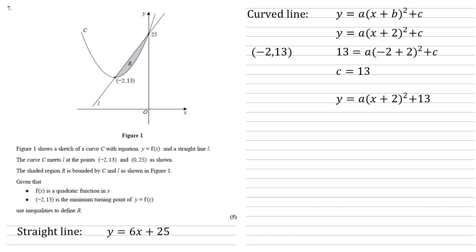So now we've got y equals a lots of x plus 2 all squared plus 13. So if we substitute in our other point, 0, 25, we've got that 25 equals a times 0 plus 2 all squared plus 13. That right hand side is 4a plus 13. So 4a is equal to 12, a is equal to 3. So we now know that the curve is y equals 3 times x plus 2 all squared plus 13.